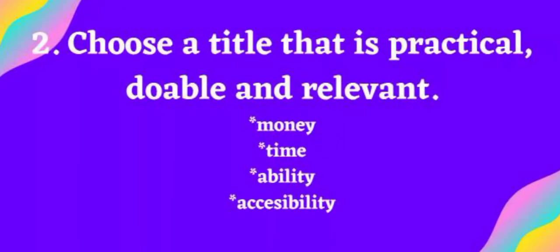Number two: choose a title that is practical, doable, and relevant. When you say practical, it's something you can really work on — for example, if you are a senior high school student, it should be feasible for you. It should be doable within your given timeframe, whether that's three months, five months, or one year. It should also be relevant — something that is needed and useful.